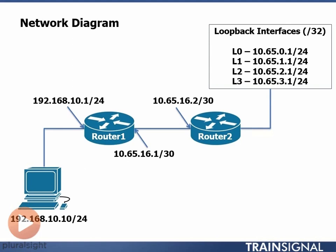If that doesn't make a whole lot of sense, don't worry — we're going to configure these on the router and you can see how they work. A lot of times it's easier than trying to explain it. Now, in this network diagram, in order to reach each one of these networks, I should point out one more thing: I say loopback interfaces up here with slash 32, and then I list each of my loopbacks with a slash 24.